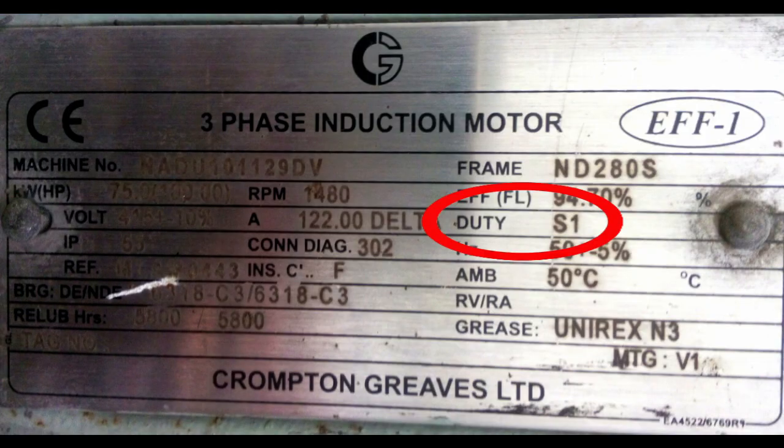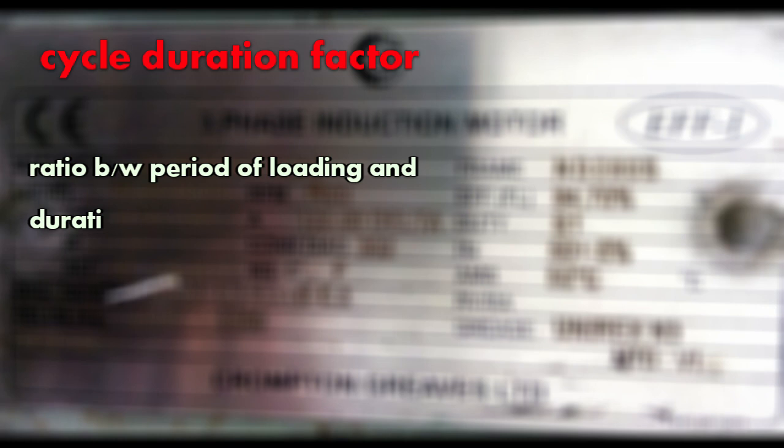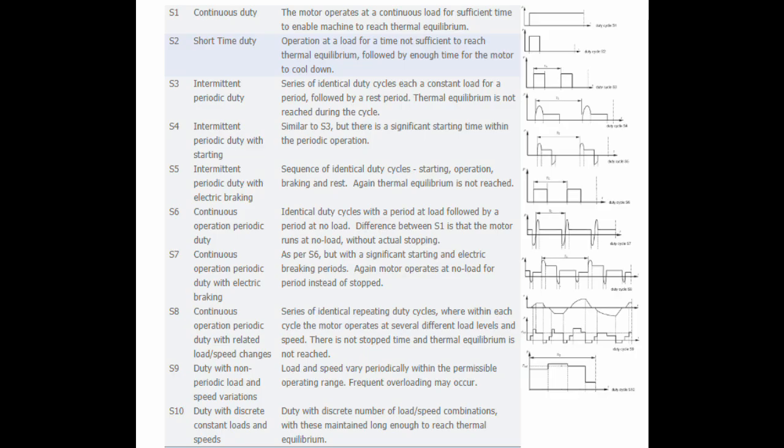Next is the duty cycle. Duty means the load cycle to which the machine is subjected and it may include starting, electric braking, no load, and rest de-energized period. The term cycle duration factor is the ratio between the period of loading to the duration of the duty cycle in percentage. We can define duties into 10 types from S1 to S10.